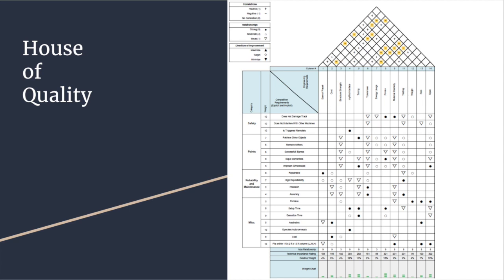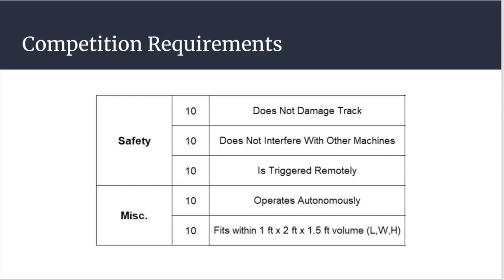We used a house of quality to identify the importance of items relating to performing consistently and not disqualifying. Important competition requirements were does not damage track, does not interfere with other machines, is triggered remotely, operates autonomously, and fits within 1 foot by 2 feet by 1.5 foot volume.